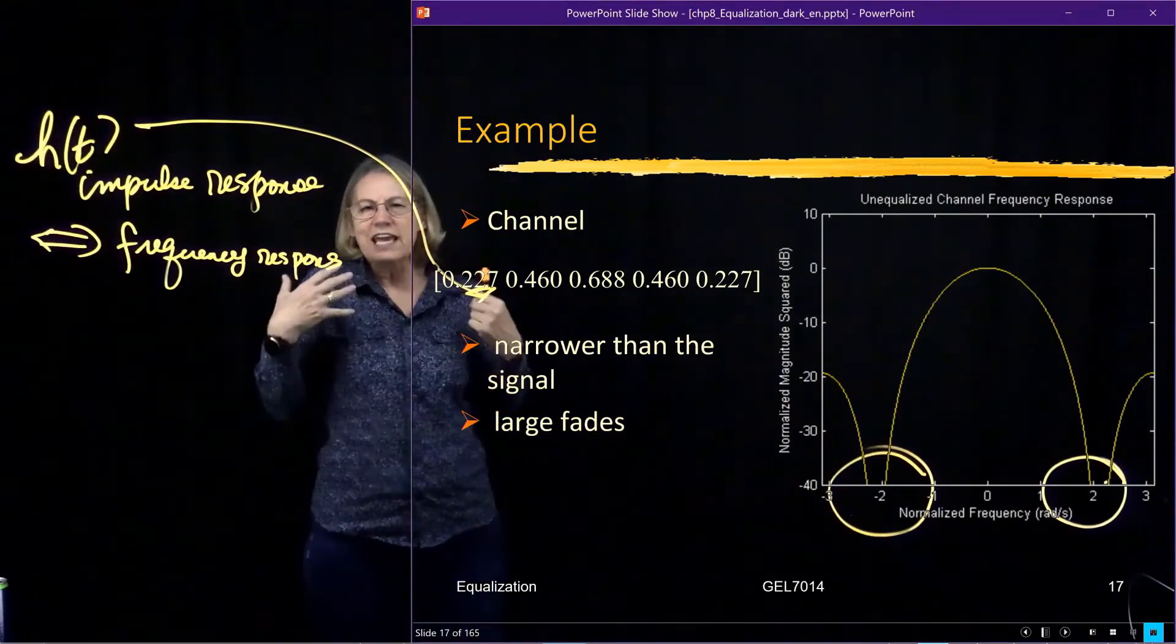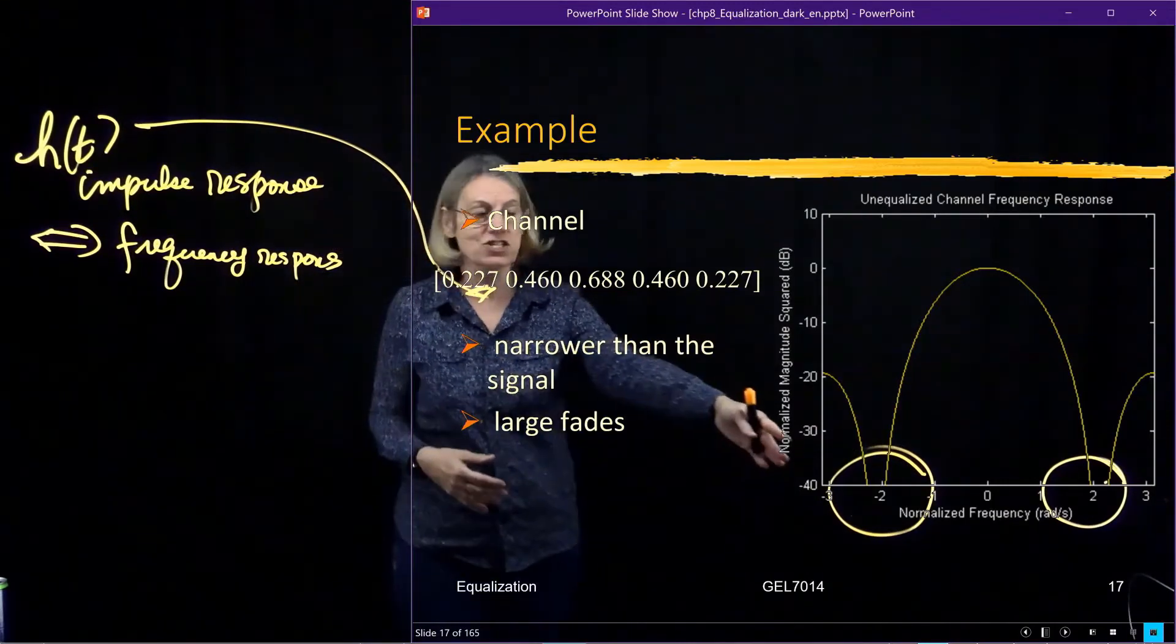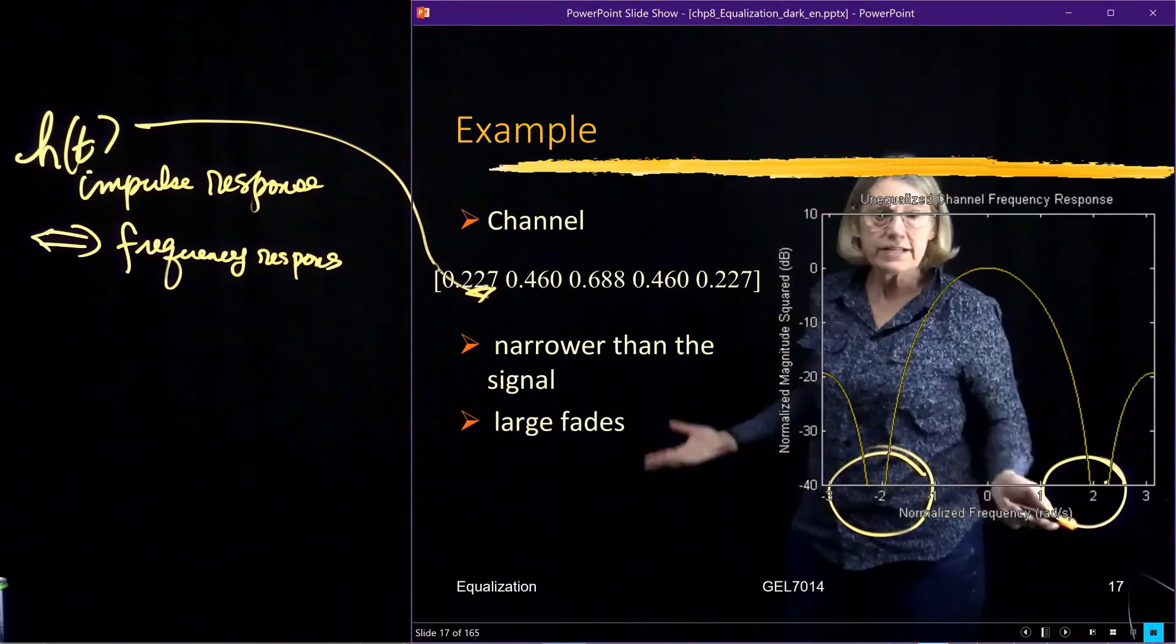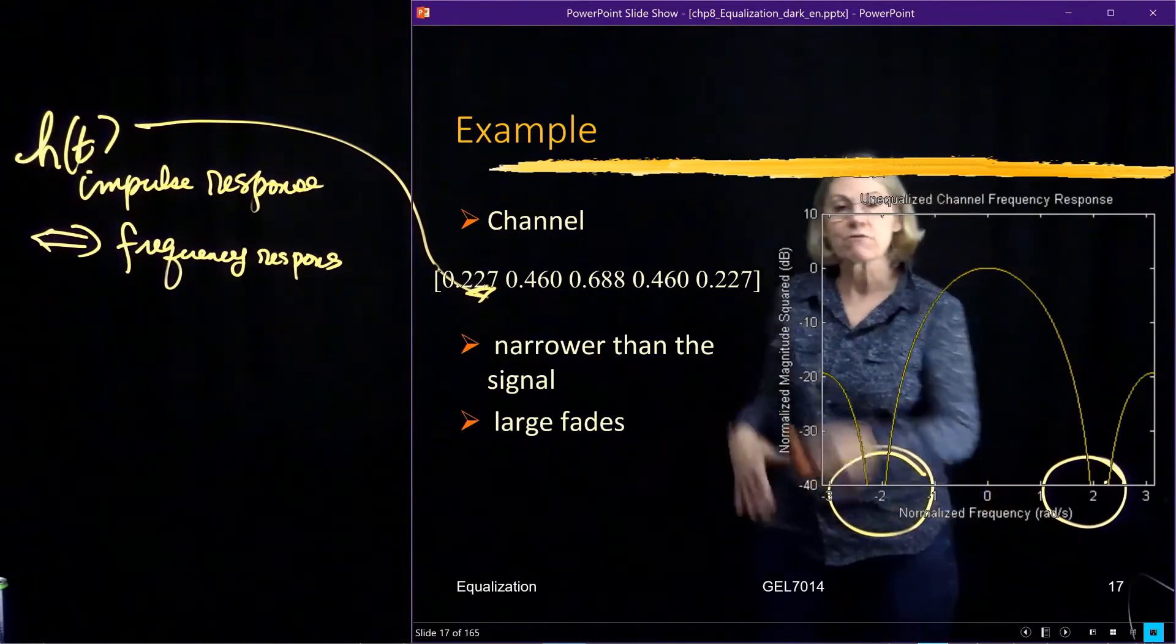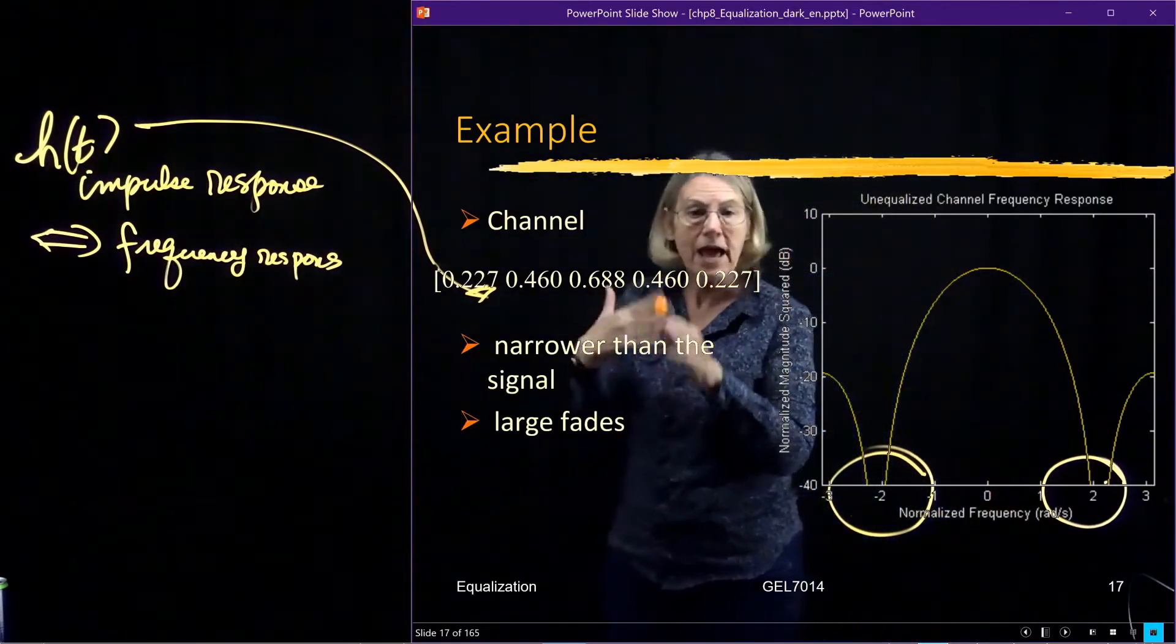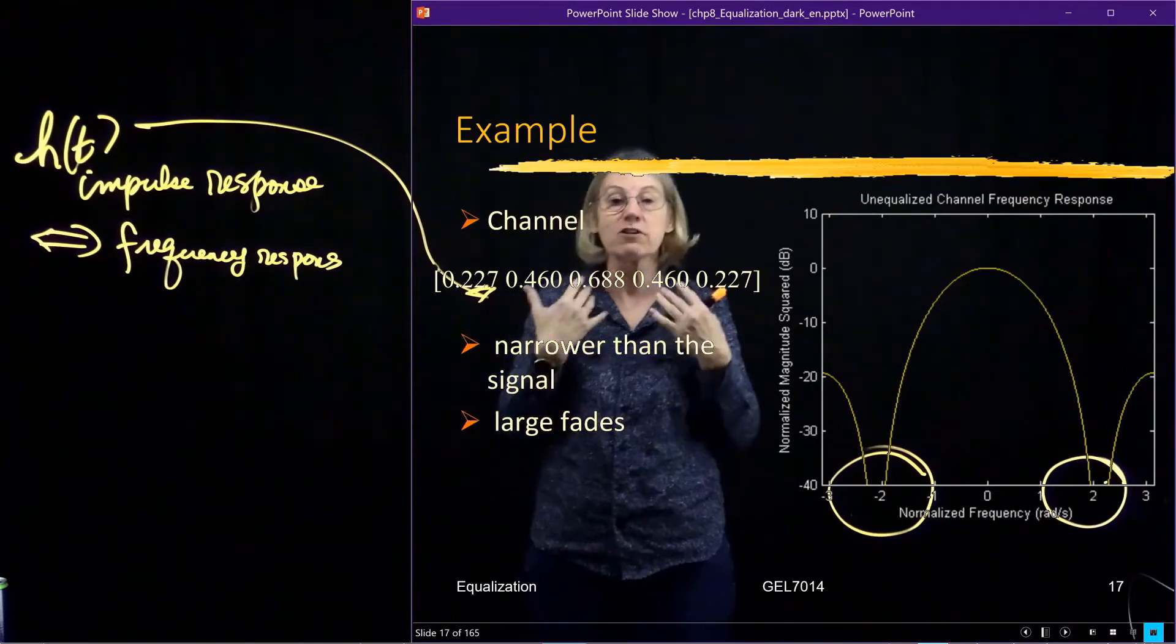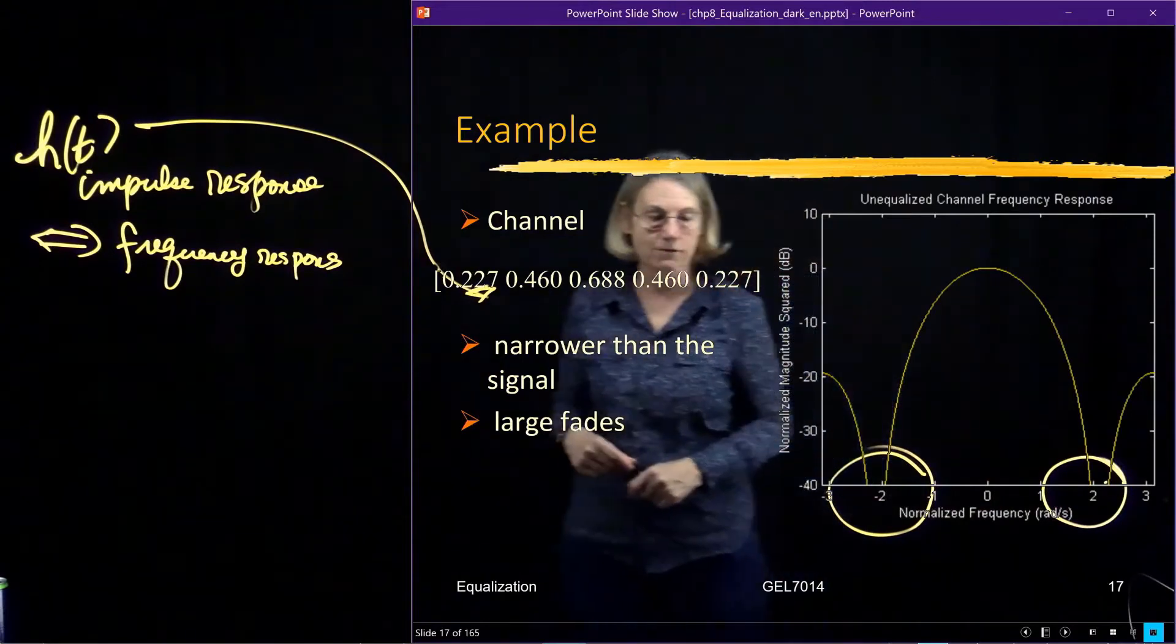So what does that mean? Well, the equalizer cannot perform miracles. If the channel actually cuts off portions of my signal, puts it down to zero, well, it's down to zero. It's gone. And I can't recreate that. So for sure for this channel, I'm not going to completely eliminate the inter-symbol interference because I have lost information. There's this information which is lost here, which I cannot recover.